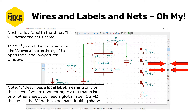Just so you're aware: L describes a local label, meaning the net only exists on this sheet. If you're connecting to a net that exists on another sheet, it's much more strongly preferred to use global labels. A global label connects throughout the entire schematic rather than just on the single sheet, and it's very useful for identifying that a net isn't just on this sheet but also on other sheets. Since we only have one sheet, we can just use local labels without any issue.